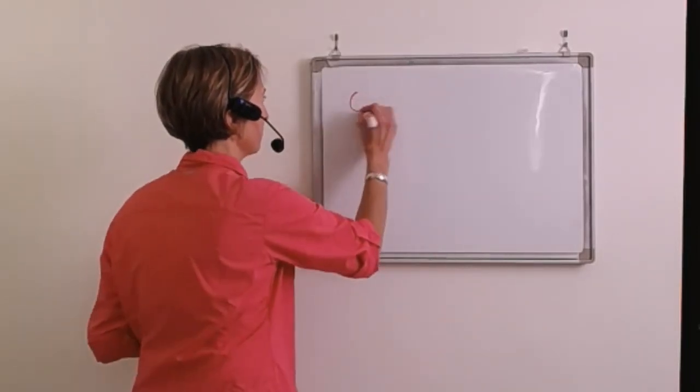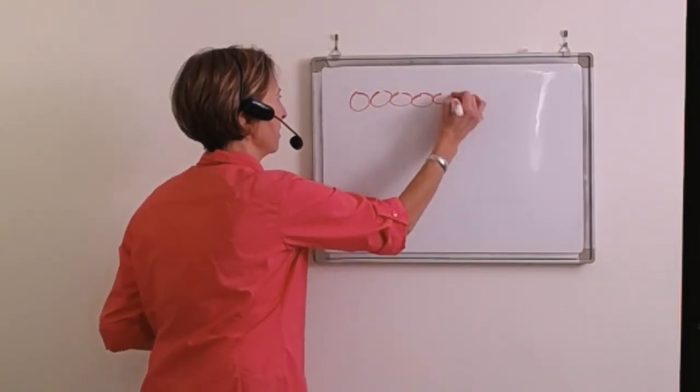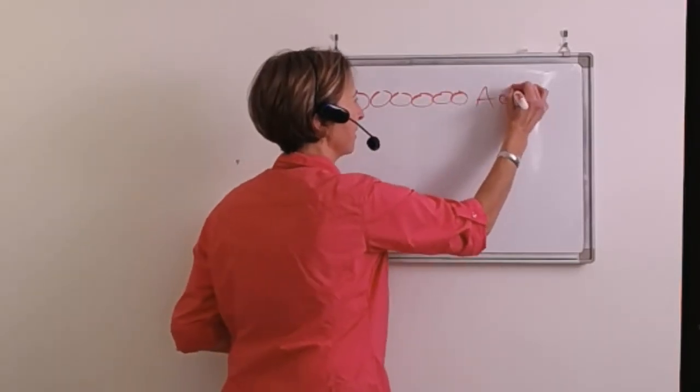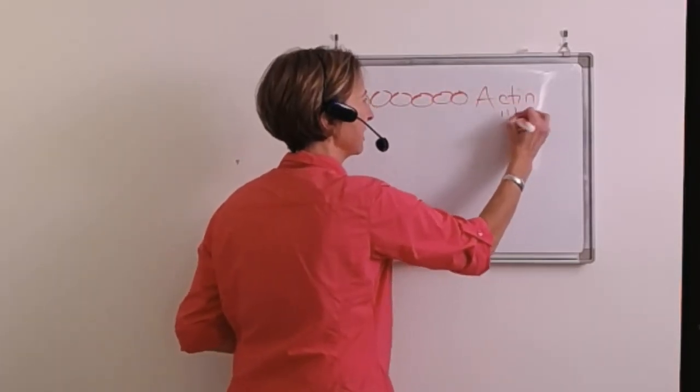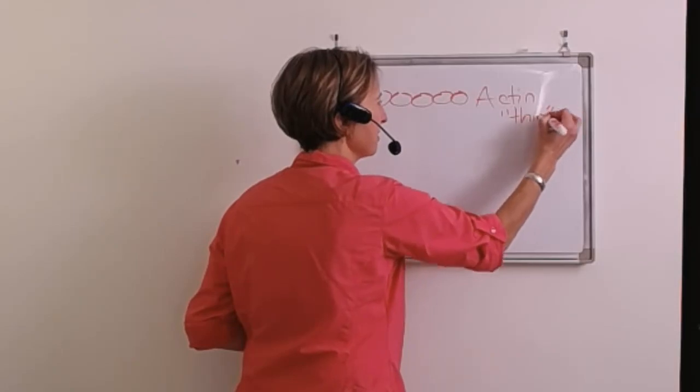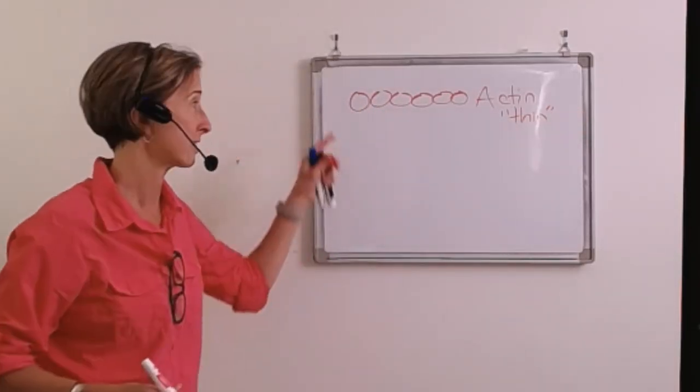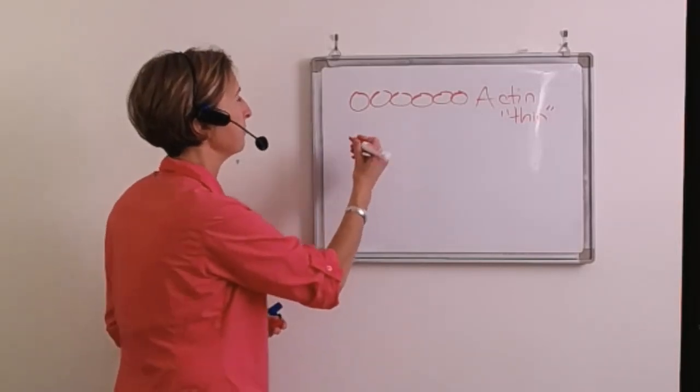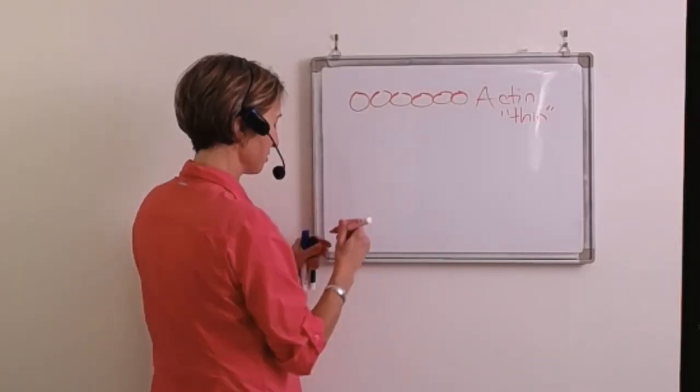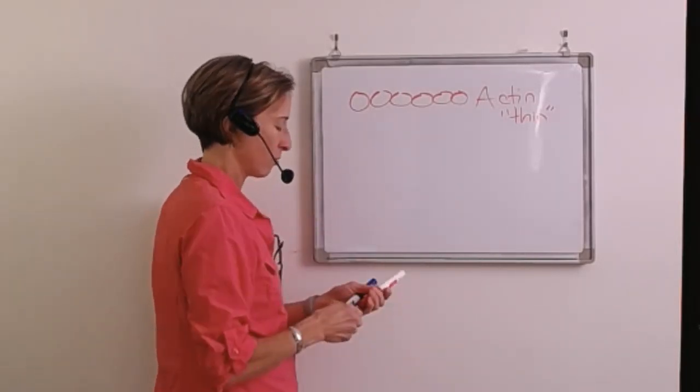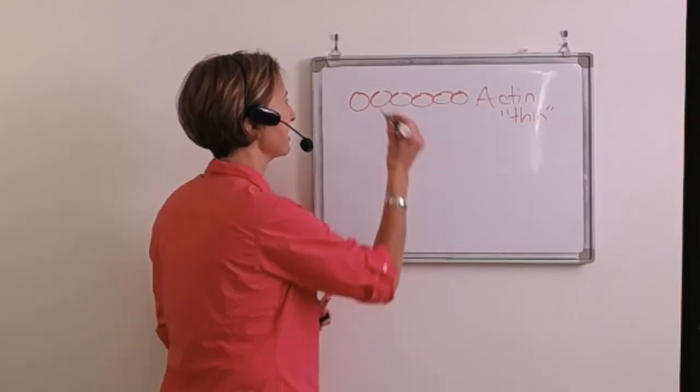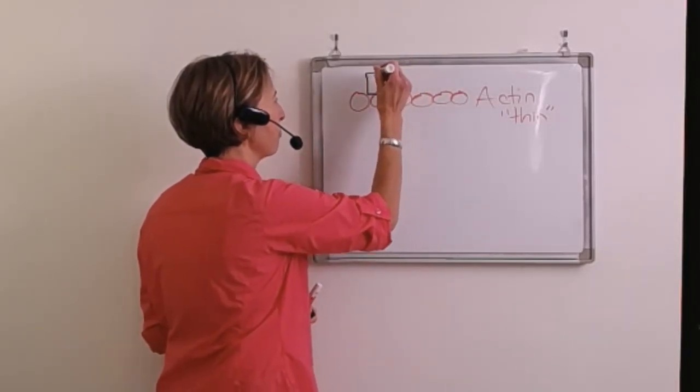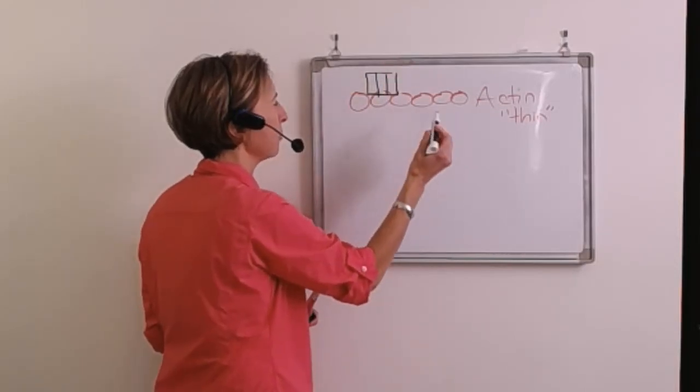Just as a little bit of a review, here is actin, which is also the thin filament. Remember, there's two strands of actin together, wound together and twisted, kind of like a double helix of DNA. And we also have some regulator proteins attached to actin, one of them being tropomyosin and troponin.